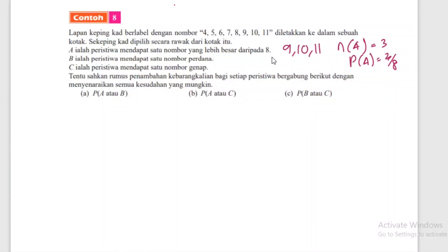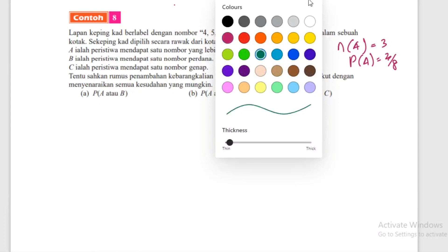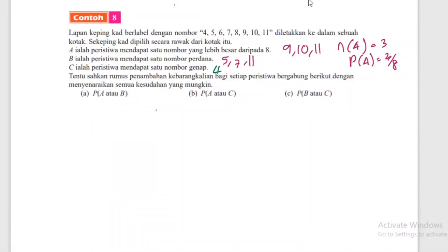B ialah peristiwa mendapat satu nombor perdana - kita ada 5, 7, 11. C ialah peristiwa mendapat satu nombor genap - kita ada 4, 6, 8, 10. Tentu sahkan rumus penambahan kebarangkalian bagi peristiwa bergabung berikut.